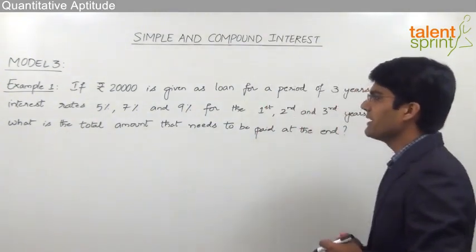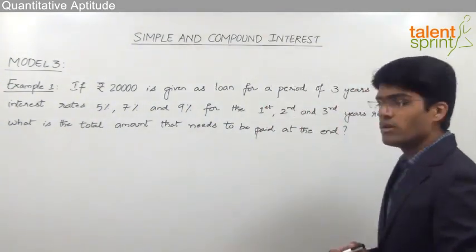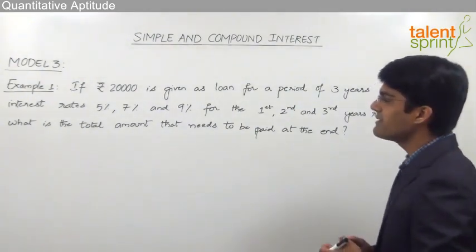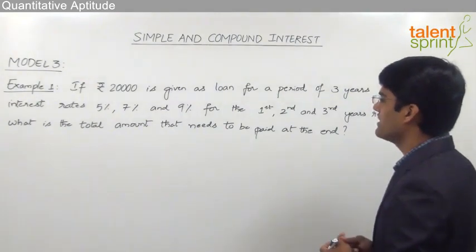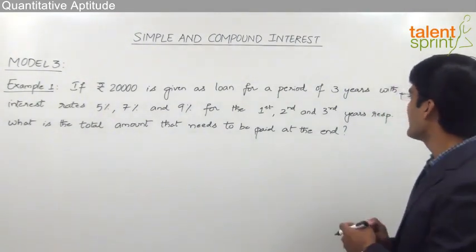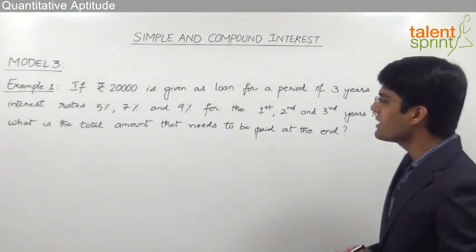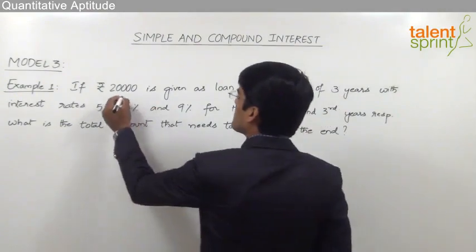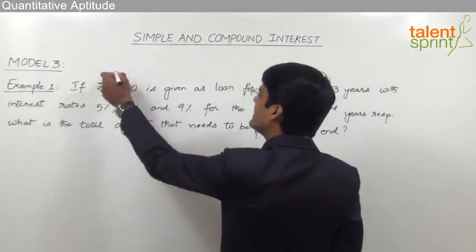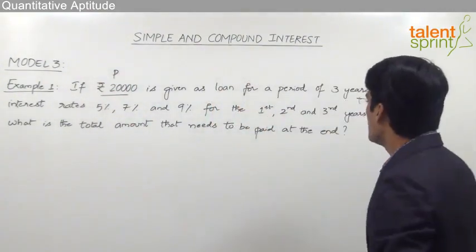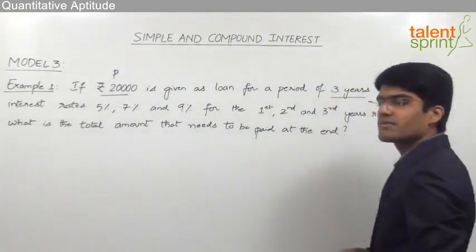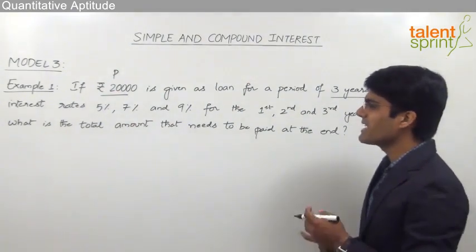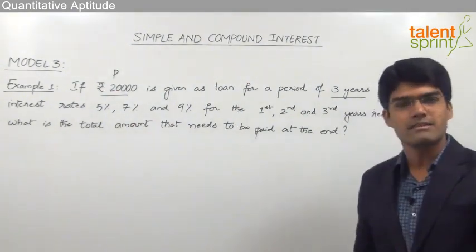The first example is: if rupees 20,000 is given as a loan for a period of 3 years with interest rates of 5%, 7%, and 9% for the first year, second year, and third year respectively. What is the total amount that needs to be paid at the end? So 20,000 is the principal amount, given for a period of 3 years, and the interest rates are 5%, 7%, and 9% for the first, second, and third year respectively.